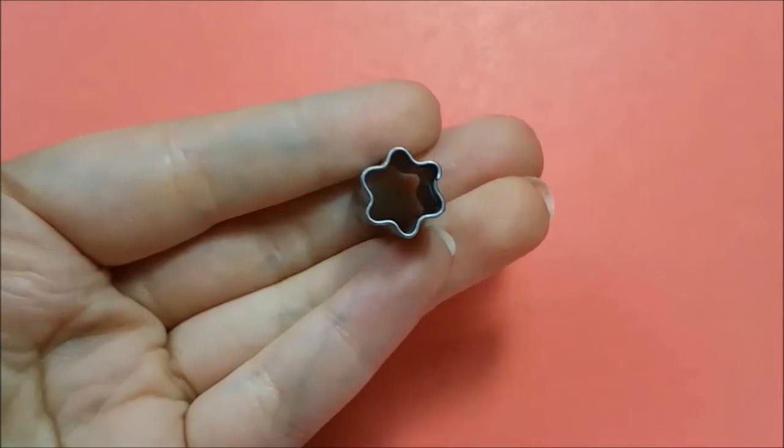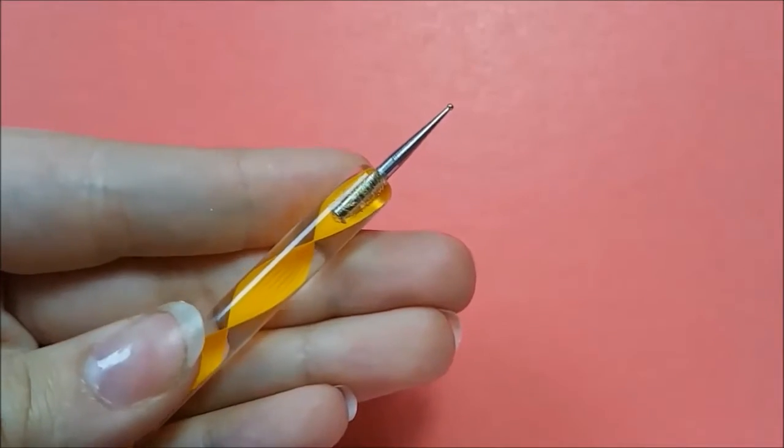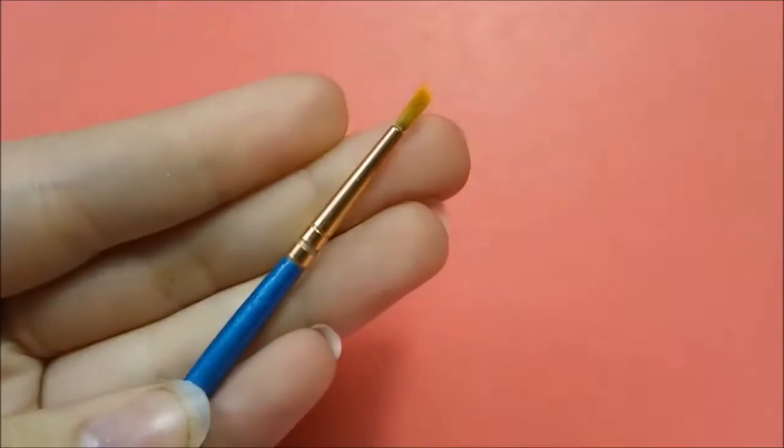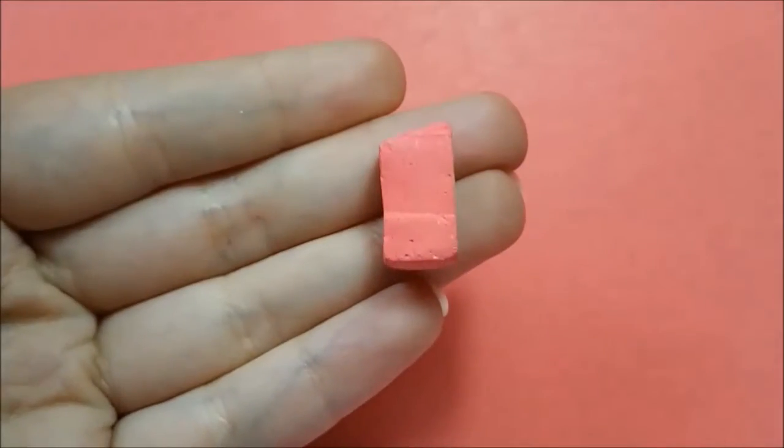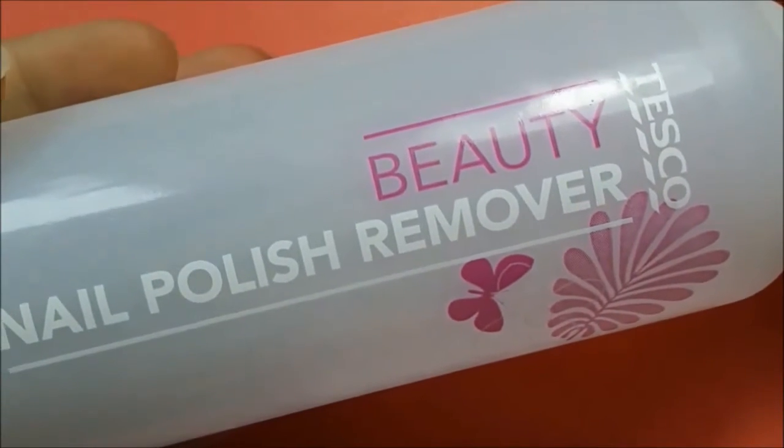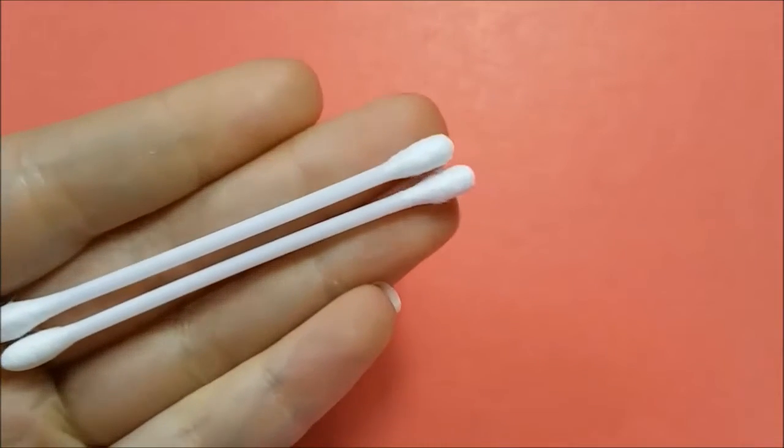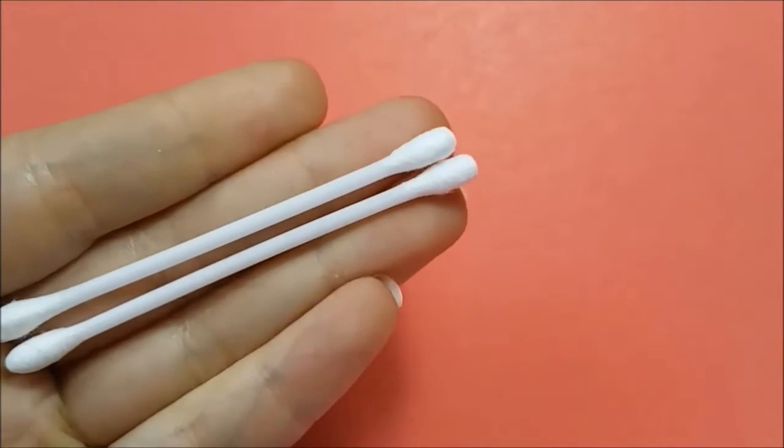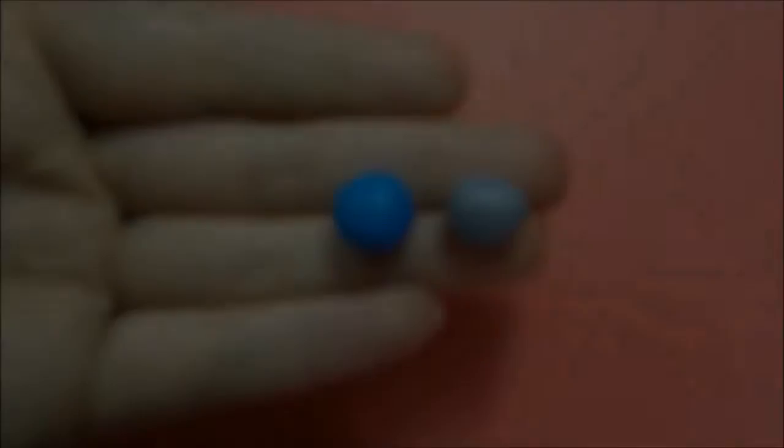You'll also need a dotting tool, a paintbrush, chalk pastel in a red pink color, nail varnish remover or acetone, q-tips or cotton buds, as well as an eye pin if you wish to make this into a charm.